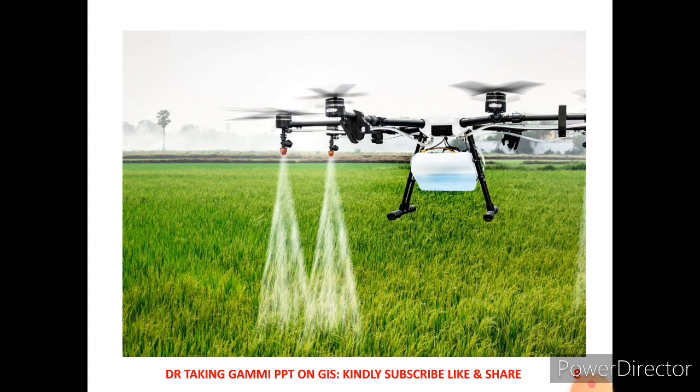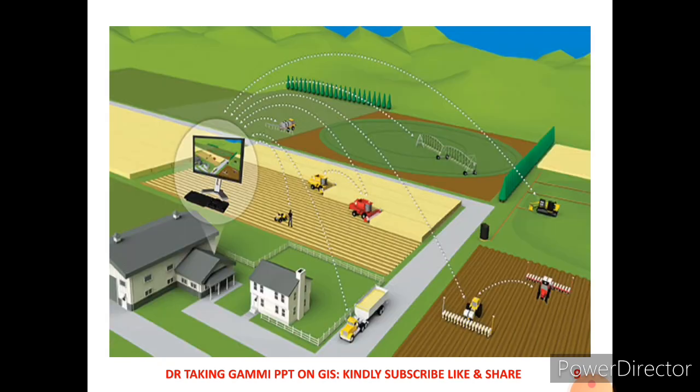Drones can be used for spraying insecticides, watering, mapping, videography, and photography. This is also an image showing how to use GIS — in a control room one can sit and observe how farming methods are going on.